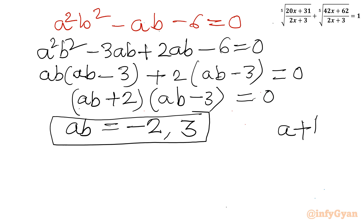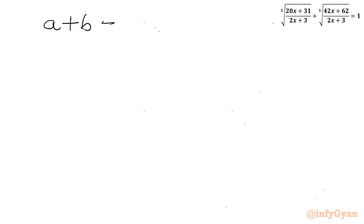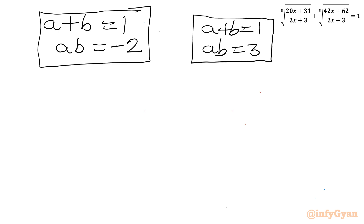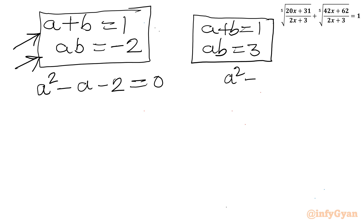Our first equation was a + b = 1. We now have two systems: system 1 with a + b = 1 and ab = −2, and system 2 with a + b = 1 and ab = 3. Treating a and b as roots of a quadratic where sum = 1 and product = ab, we get: first quadratic, a² − a − 2 = 0, and second quadratic, a² − a + 3 = 0.